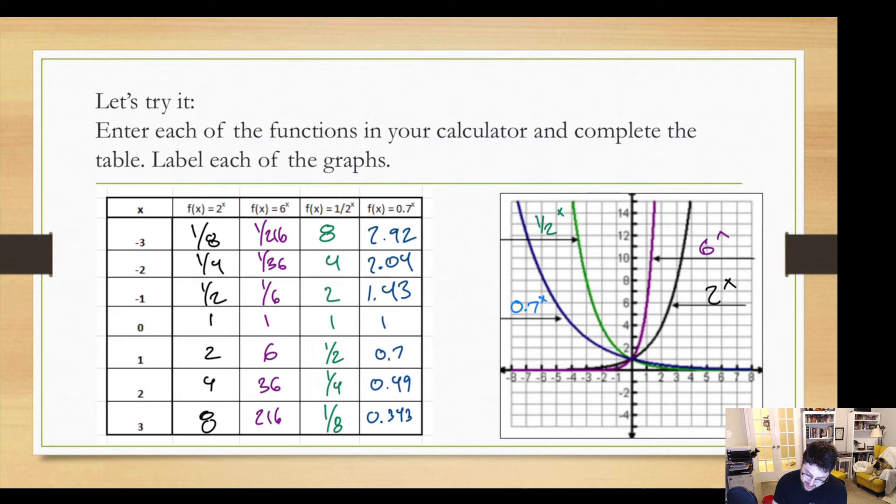Now you may also notice that all the graphs on the right side, all the ones that are going up on the right side, are the numbers that are bigger than one. Six and two are bigger than one. All the ones that are going up on the left side are smaller than one. This will come into effect very soon. Just table that for now.